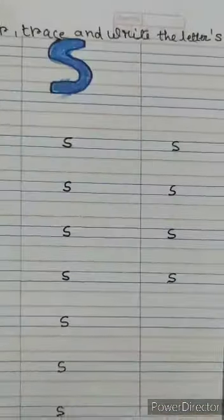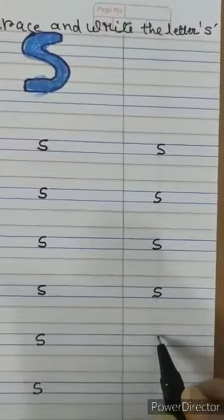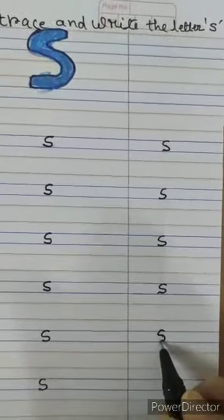So, we have traced. Now, we will write letter S. Yes. Middle line, okay? Blue line. Two blue lines. Yes.